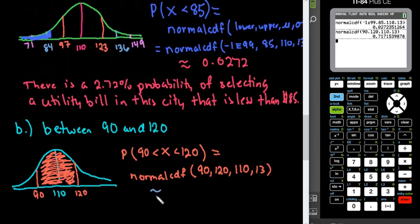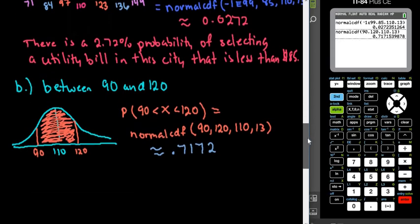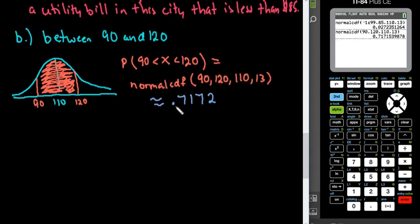And then we would just hit enter again to get the answer. So for this one, we see that it's approximately 0.7172. So we could say that there's approximately a 71.72% probability of selecting a bill in this city that's between $90 and $120.